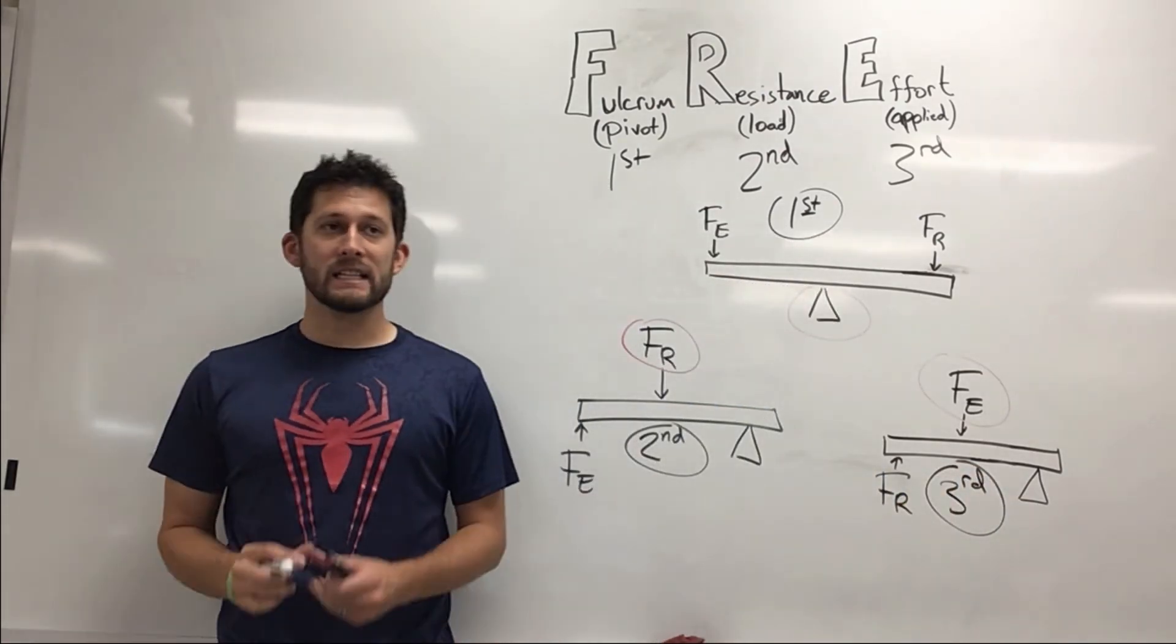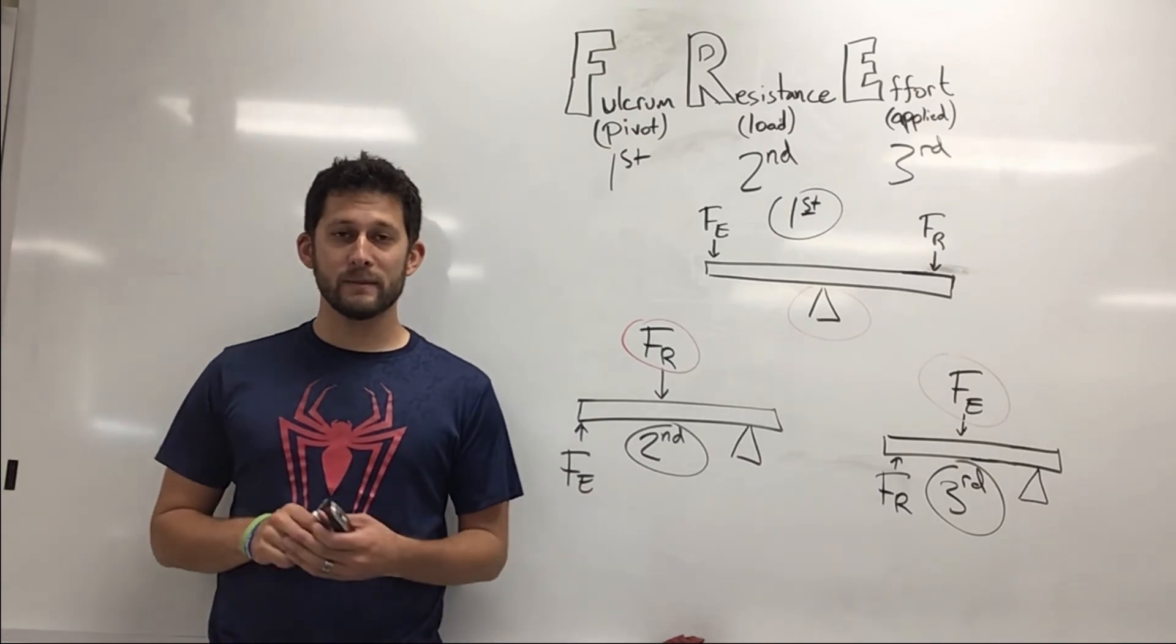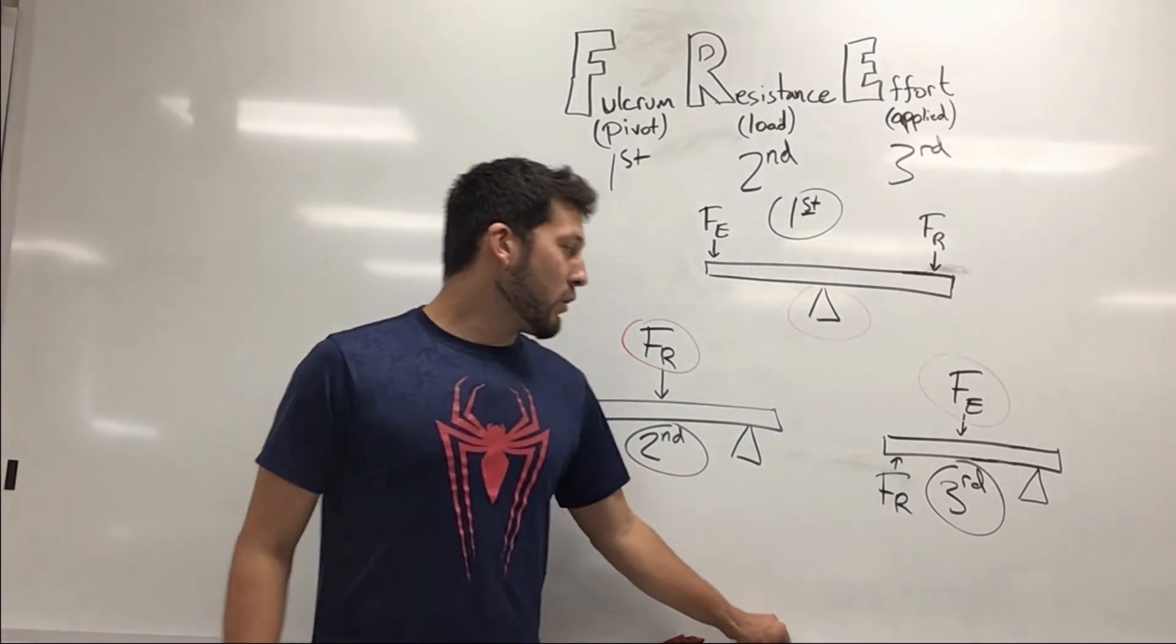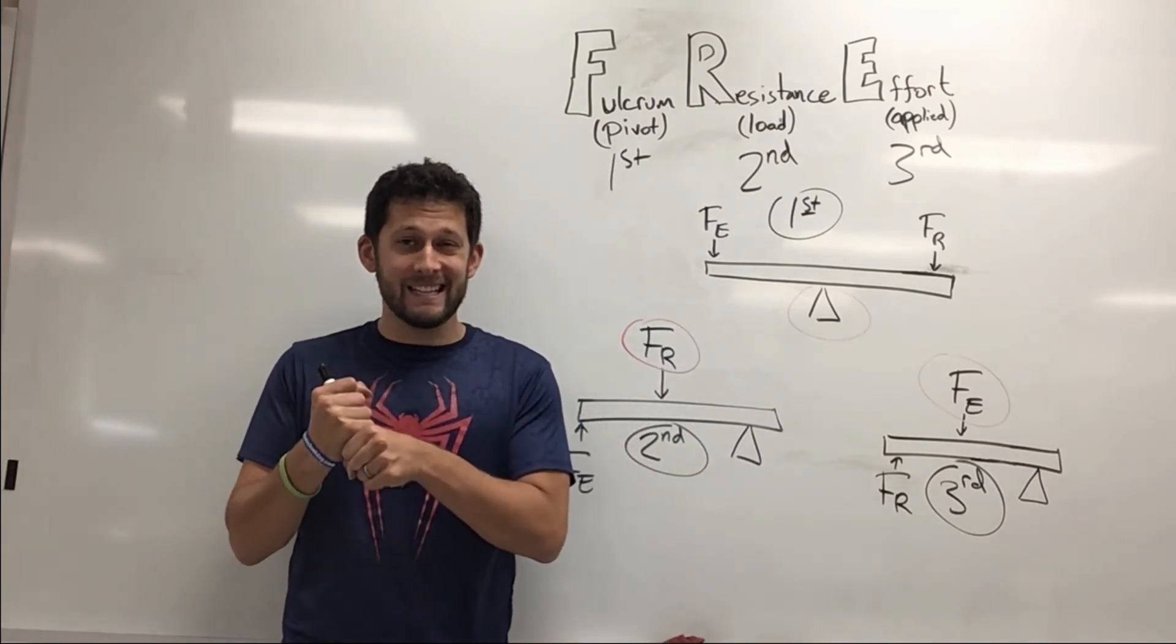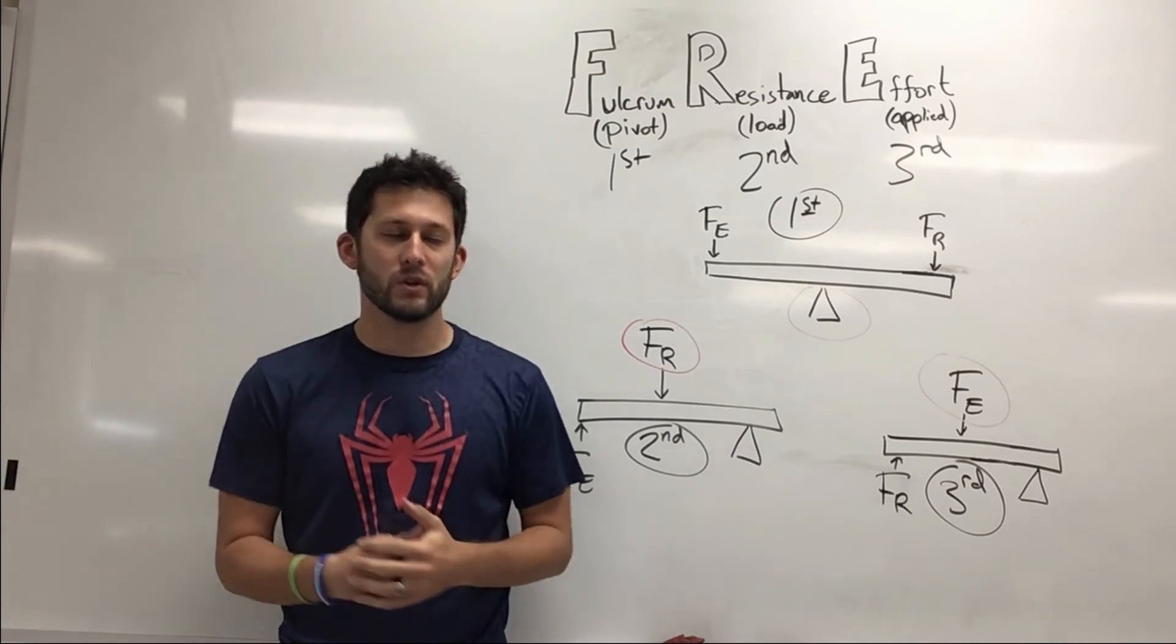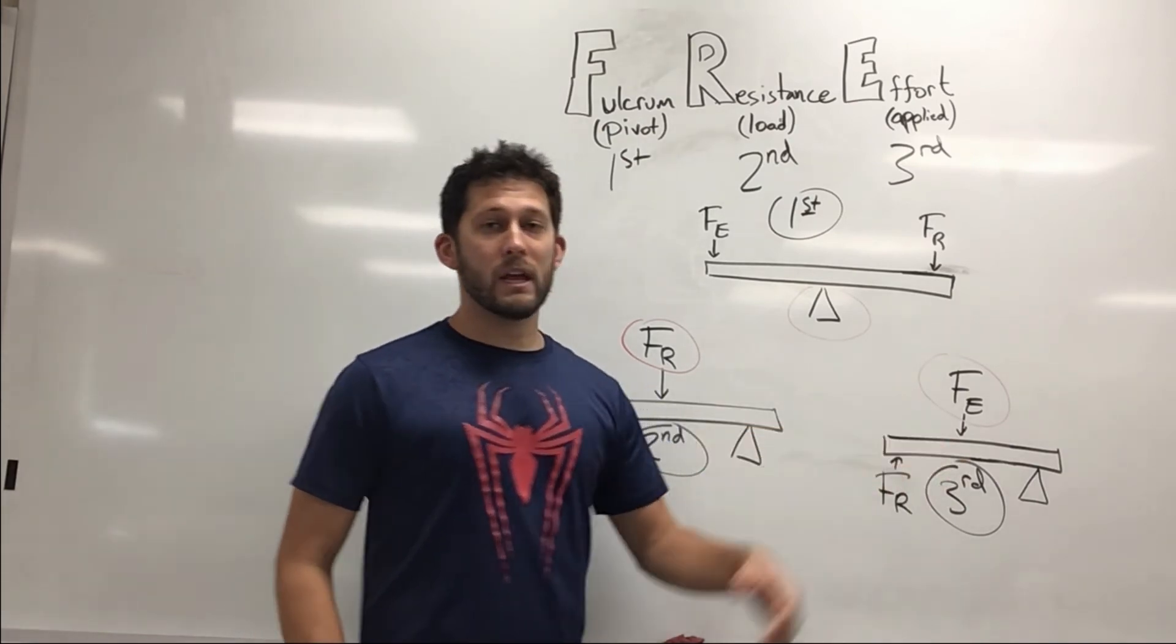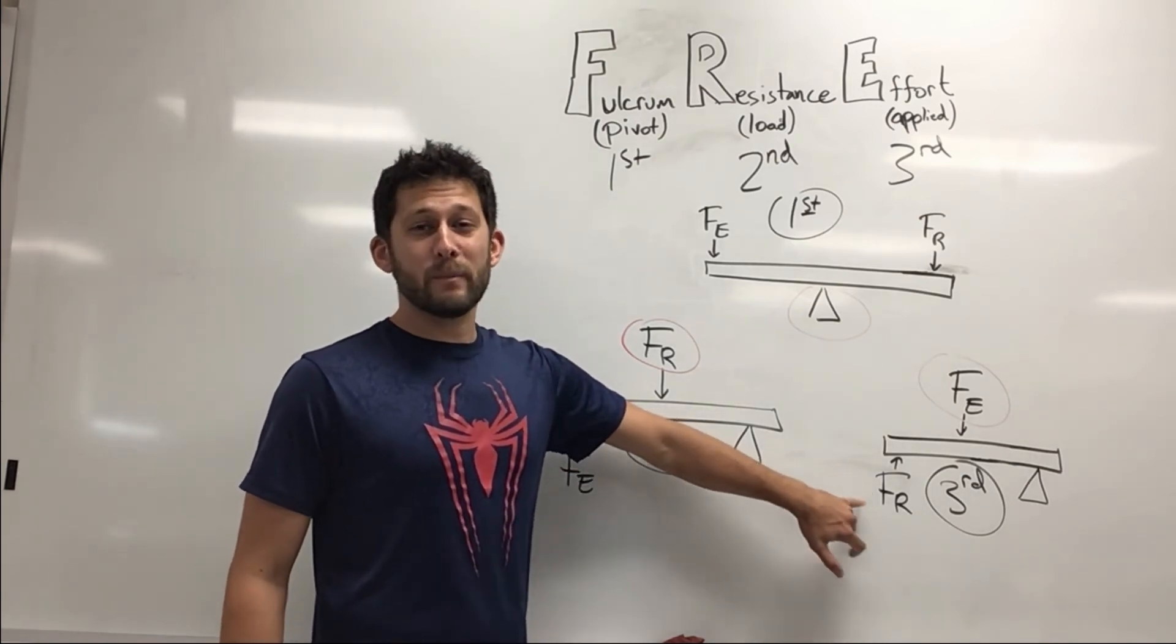And an example of a third class lever would be something like a baseball bat. If you're swinging to hit a baseball or a softball, your fulcrum or your pivot is going to be your wrists, your hands, because that's kind of where you're rotating, potentially your elbows and your shoulders as well. The effort is the force that you are applying, and on the end of your bat is probably that baseball.